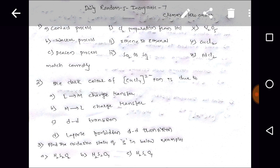We have given three steps we need to match correctly. So A contact process, B walker process, C deacon process. And 1 chlorine preparation from HCl, 2 ethane to ethanol preparation, and 3 sulfur dioxide to sulfur trioxide preparation.